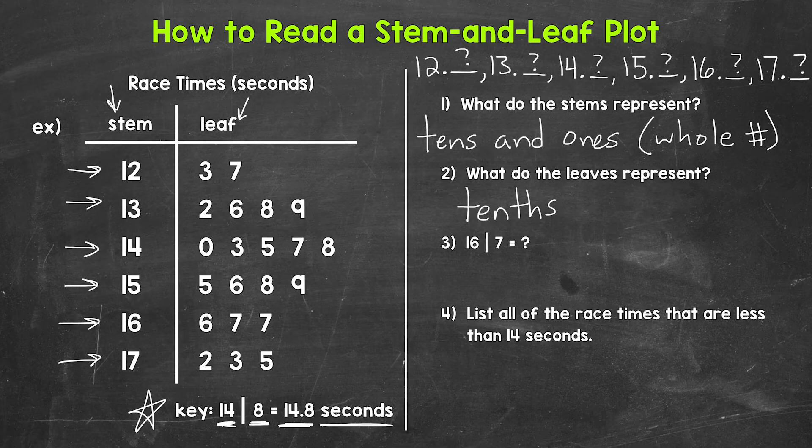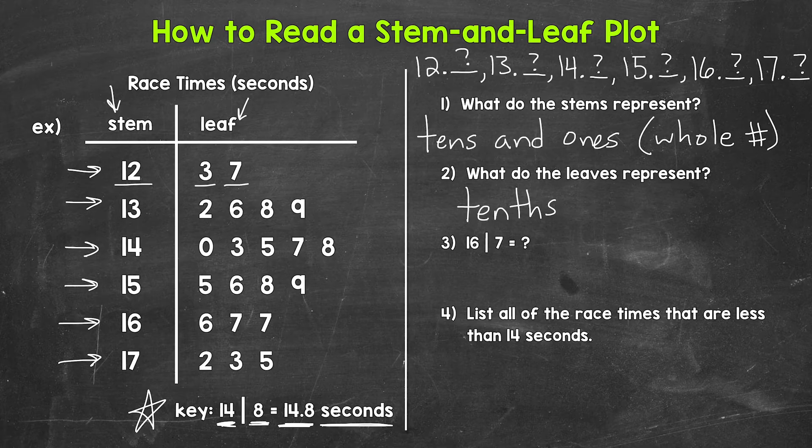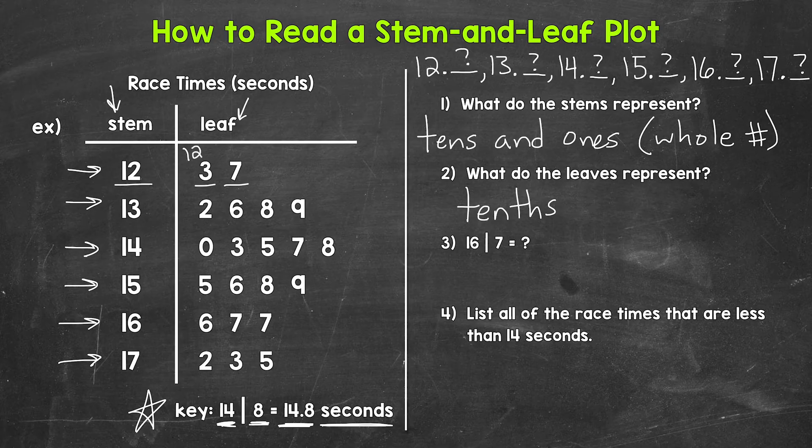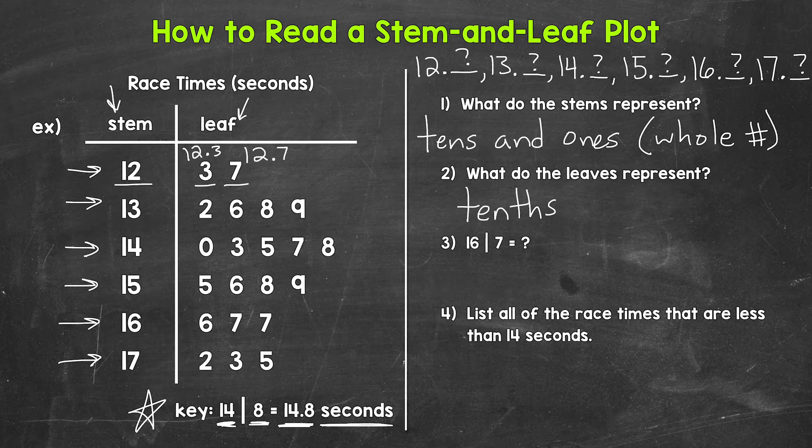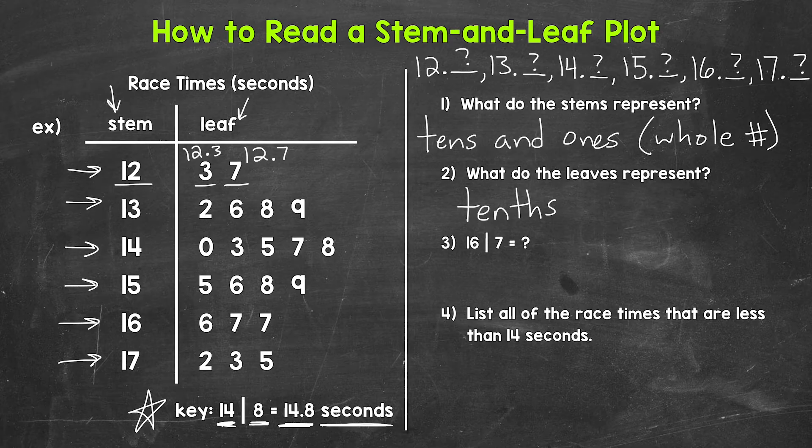For example, let's take a look at the stem of 12. So stem of 12, and then a leaf of 3 and a leaf of 7. So that gives us 12 and 3 tenths, and then 12 and 7 tenths. So those are the 12 second race times, 12.3 seconds and 12.7 seconds.